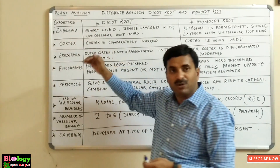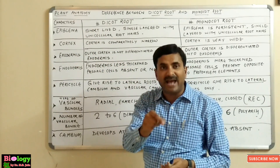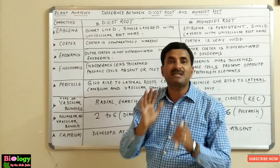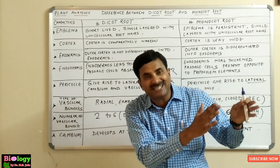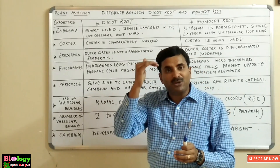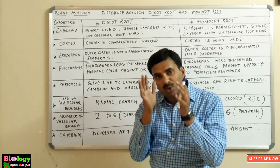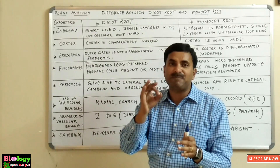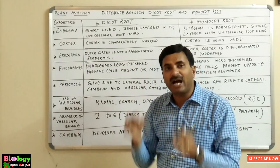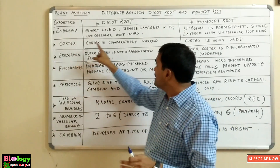Just below the epiblema is the cortex. An important point: in roots, just below the epiblema, hypodermis is altogether absent. Hypodermis was present in the dicot stem and monocot stem, but in both dicot root and monocot root, hypodermis is completely absent below the epiblema.